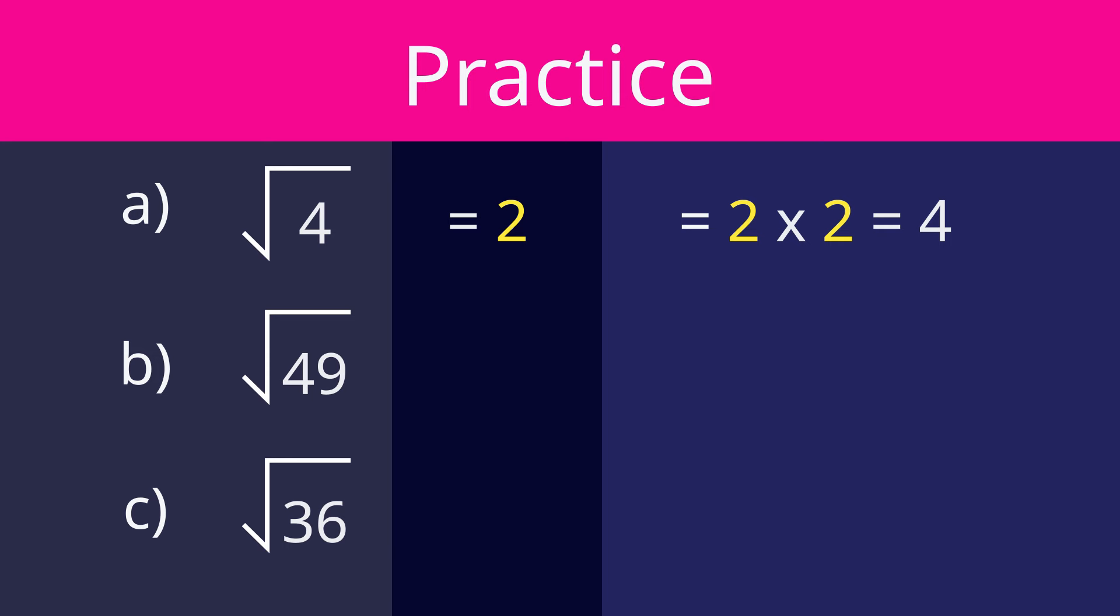Square root of 49 equals 7, because 7 times 7 equals 49. Square root of 36 equals 6, because 6 times 6 equals 36.